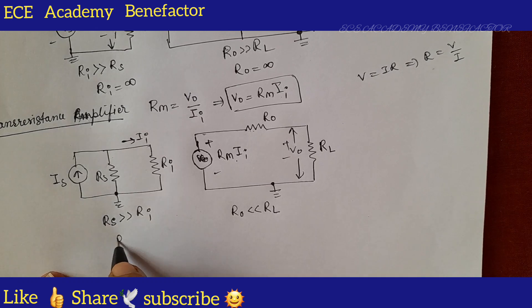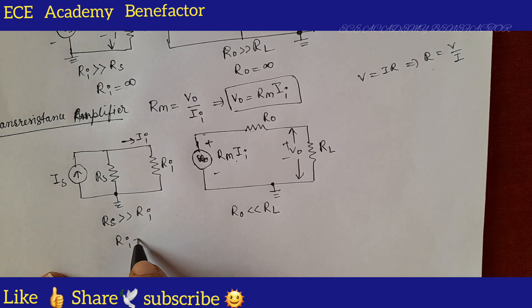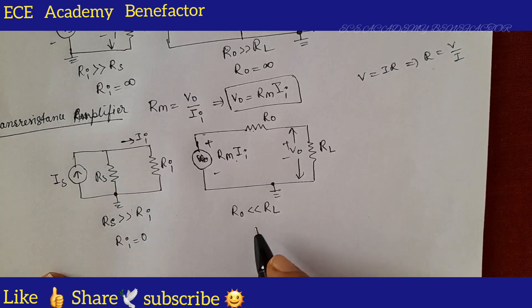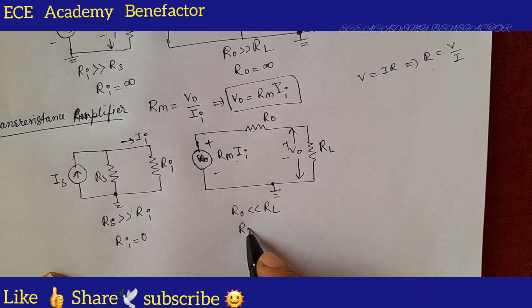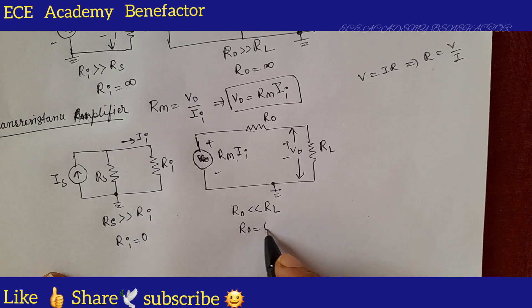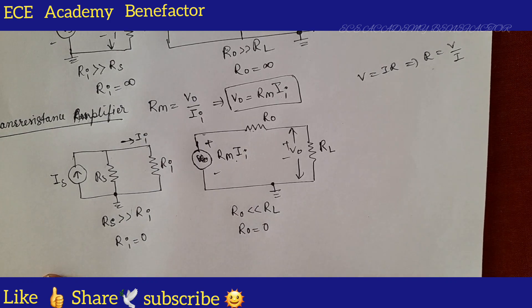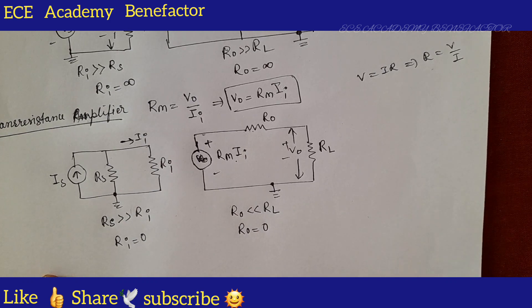Ideally, Ri is 0 and Ro is 0 for the trans-resistance amplifier.